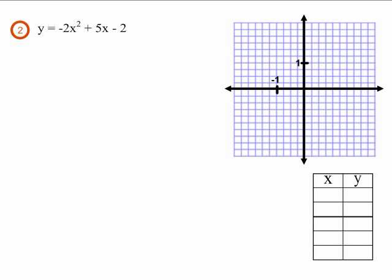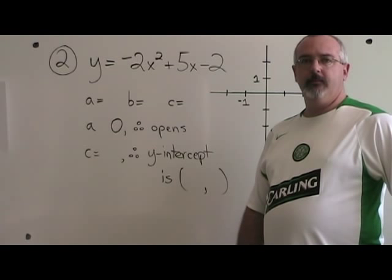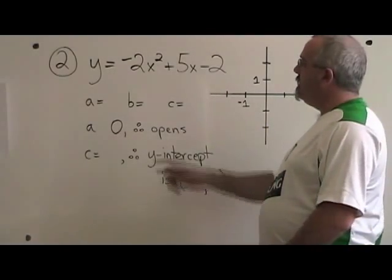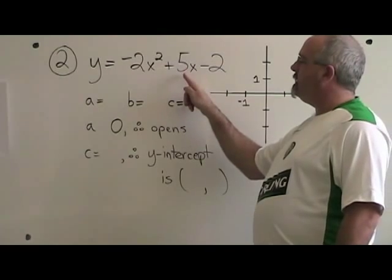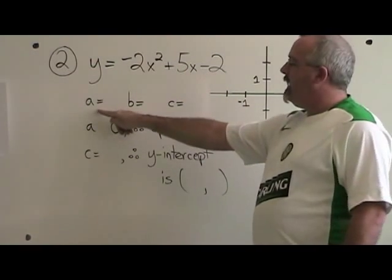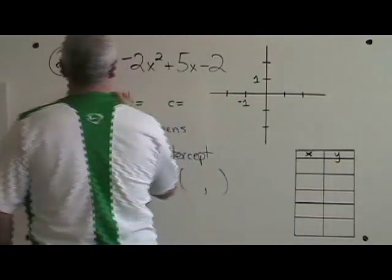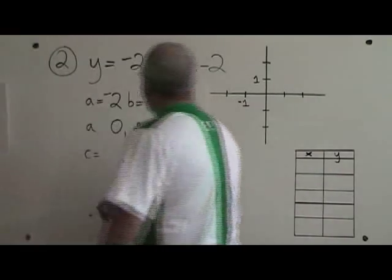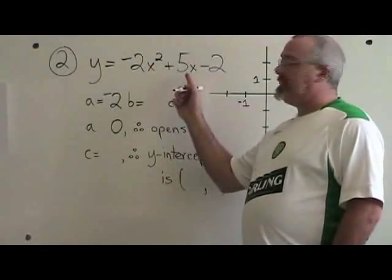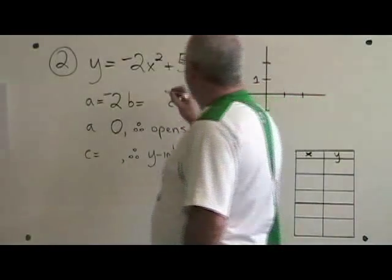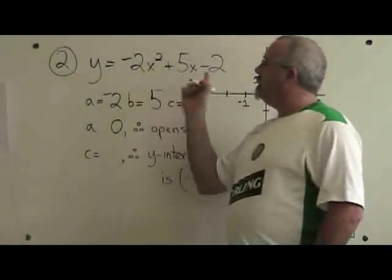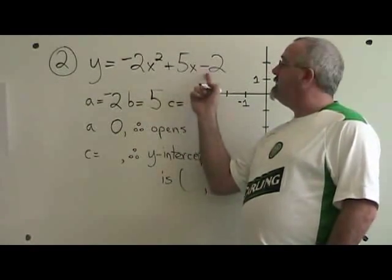My equation for example 2 is y equals negative 2x squared plus 5x minus 2. Let's get started. Our a is the numerical coefficient of the first term, a equals negative 2. Our b is the numerical coefficient of the second term, b equals 5. And our c equals negative 2.